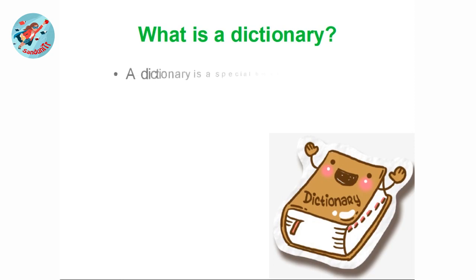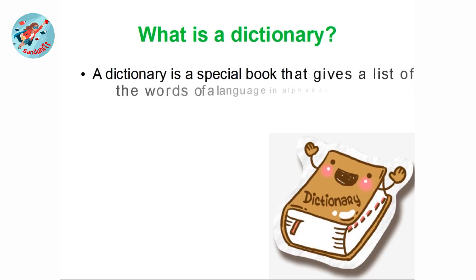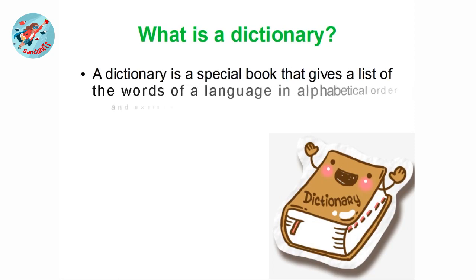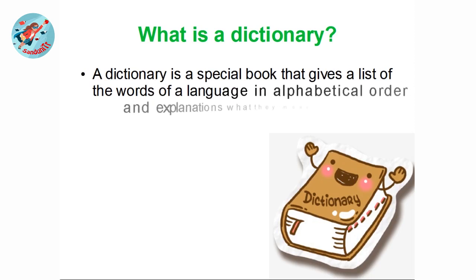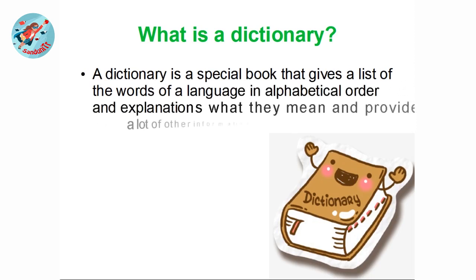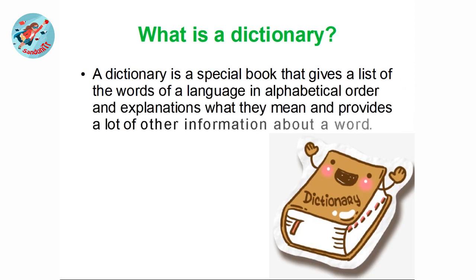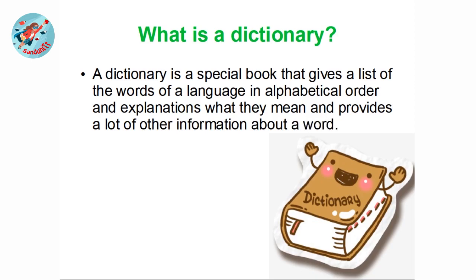A dictionary is a special book that gives a list of the words of a language in alphabetical order and explains what they mean, and provides a lot of other information about a word.